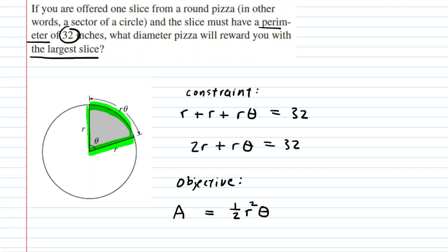Again, as long as theta is in radians. Now, that's our objective, but the problem with the objective is that it is based on two variables, the radius and theta. It makes the problem easier if we can have the objective equation in terms of just a single variable.